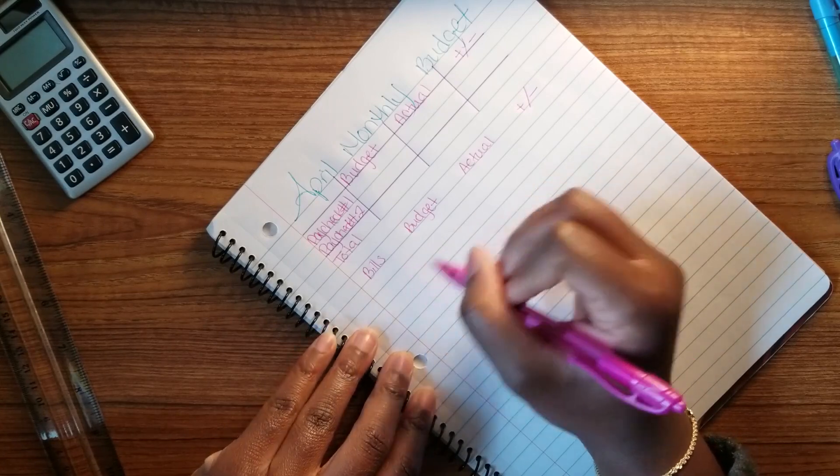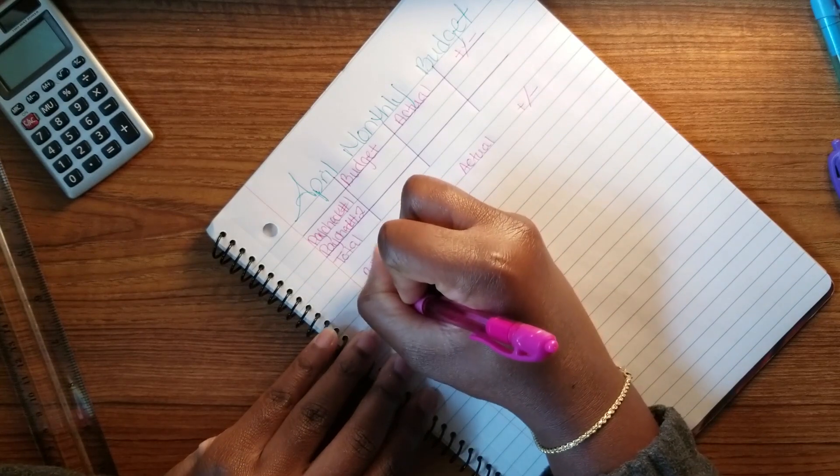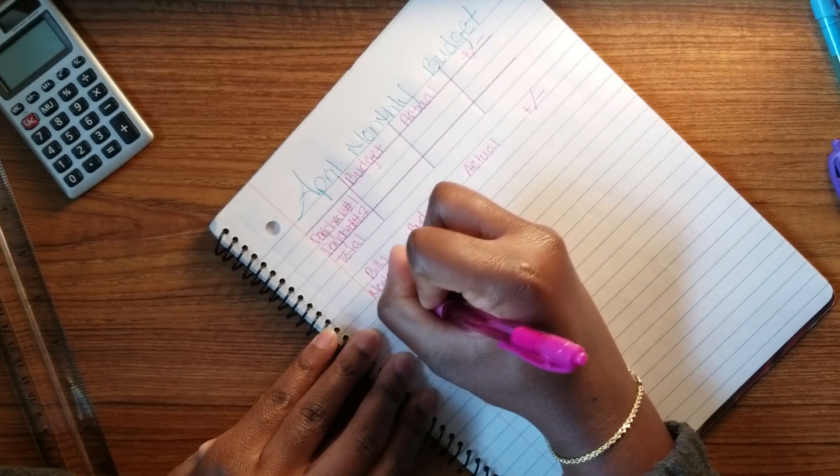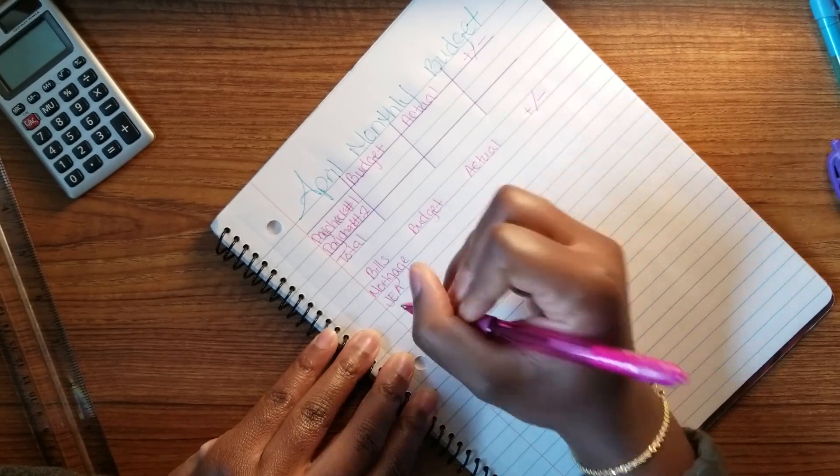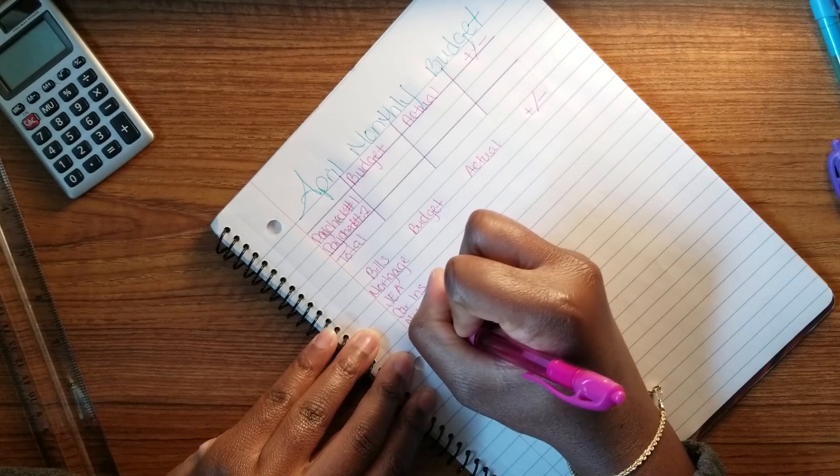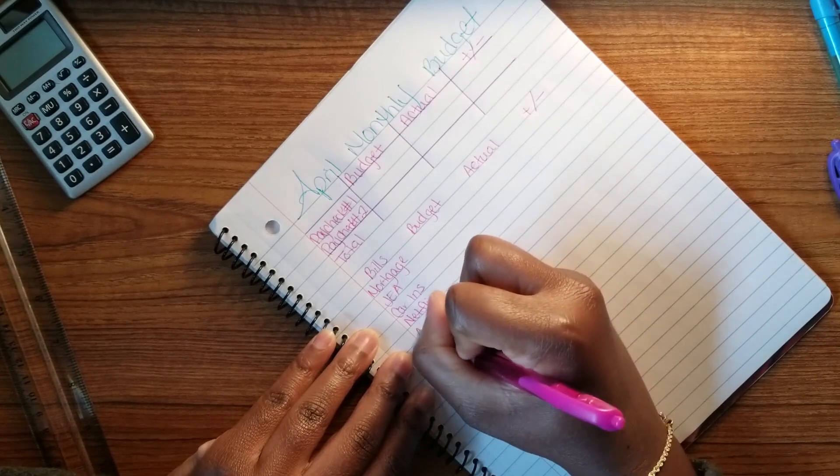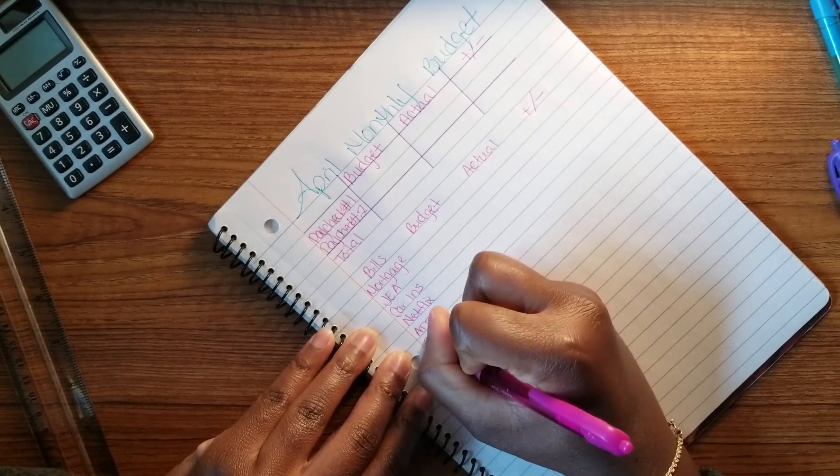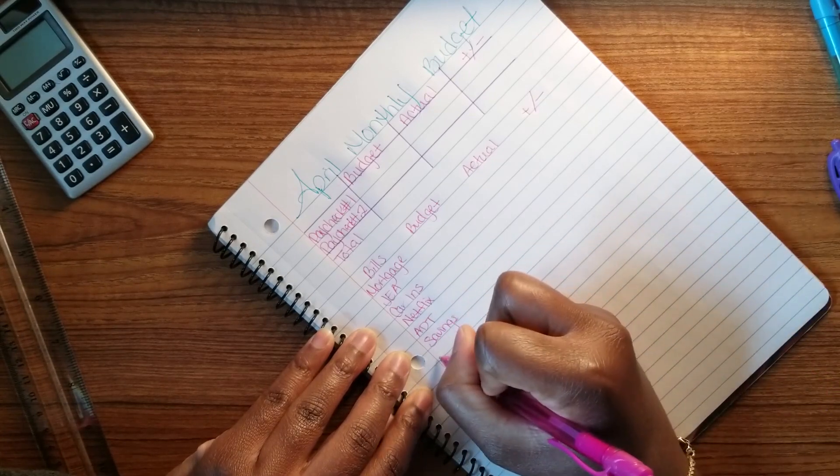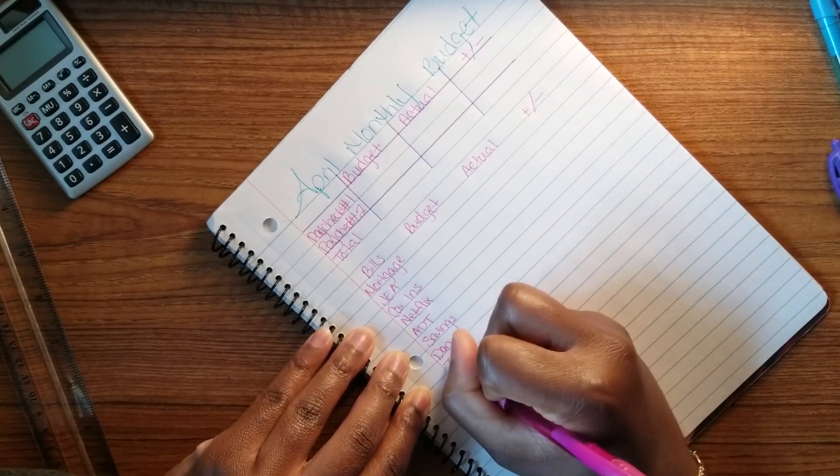I have my bills, budget, actual, plus and minus. My bills include my mortgage, my JEA which is pretty much my electricity, water, and sewer, my car insurance, my Netflix, my ADT. I put my savings in my bills section as well, and I have to pay back the homie, so I'm putting it in as one of my bills.